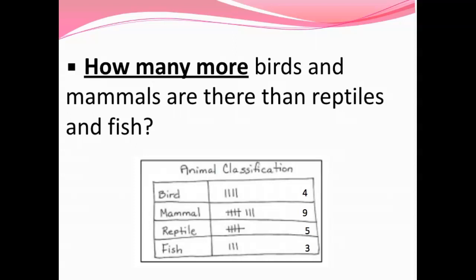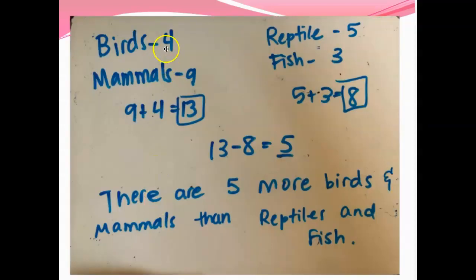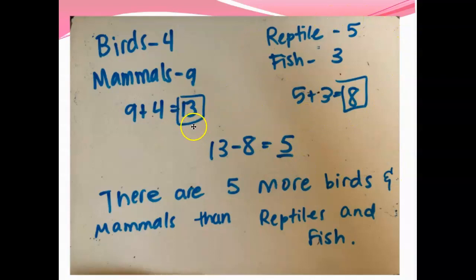How many more birds and mammals are there than reptiles and fish? This one is a little tricky — it says 'how many more' so we know we're going to have to do a subtraction problem. But before you subtract you're going to have to add up the birds and the mammals, and the reptiles and the fish, and then subtract. I added up birds and mammals — nine plus four — and got 13. Then I added reptiles and fish: five plus three is eight. 13 minus eight equals five. There are five more birds and mammals than reptiles and fish.